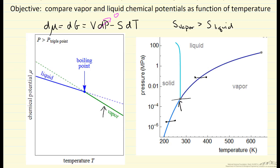Of course, if we covered a wide temperature range, the entropy would be changing. If we look at a different pressure, the slope of the vapor line would change, but the slope of the liquid line would hardly change.